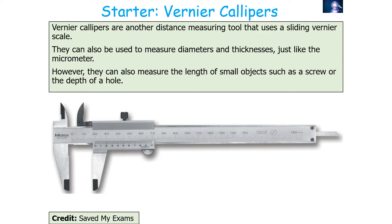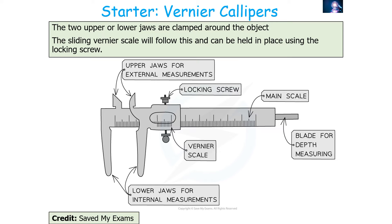Vernier callipers are another distance measuring tool that uses the vernier scale, used to measure very small distances such as the diameter or thickness of wires. They can also measure the length of small objects like a screw or ball bearing, or the depth of a hole such as an impact crater. For a vernier calliper, the two jaws are clamped around the object or hole, and the sliding vernier scale follows and can be locked with a locking screw.